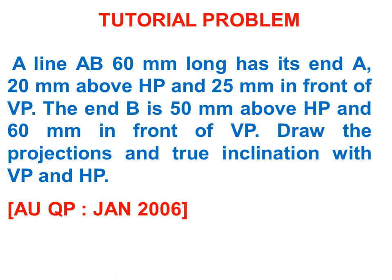The tutorial problem is: a line AB 60mm long has its end A 20mm above HP and 25mm in front of VP. The end B is 50mm above HP and 60mm in front of VP. Draw the projections and true inclination with VP and HP.